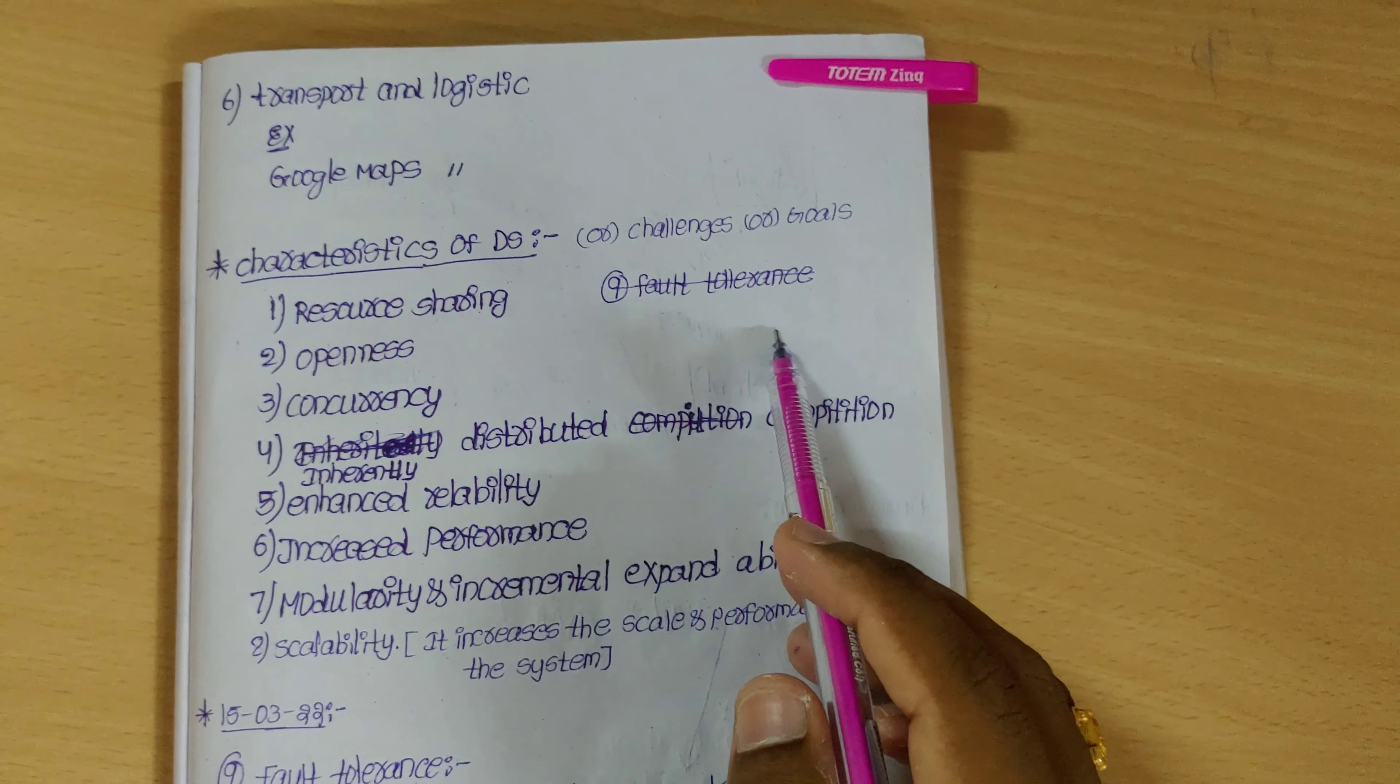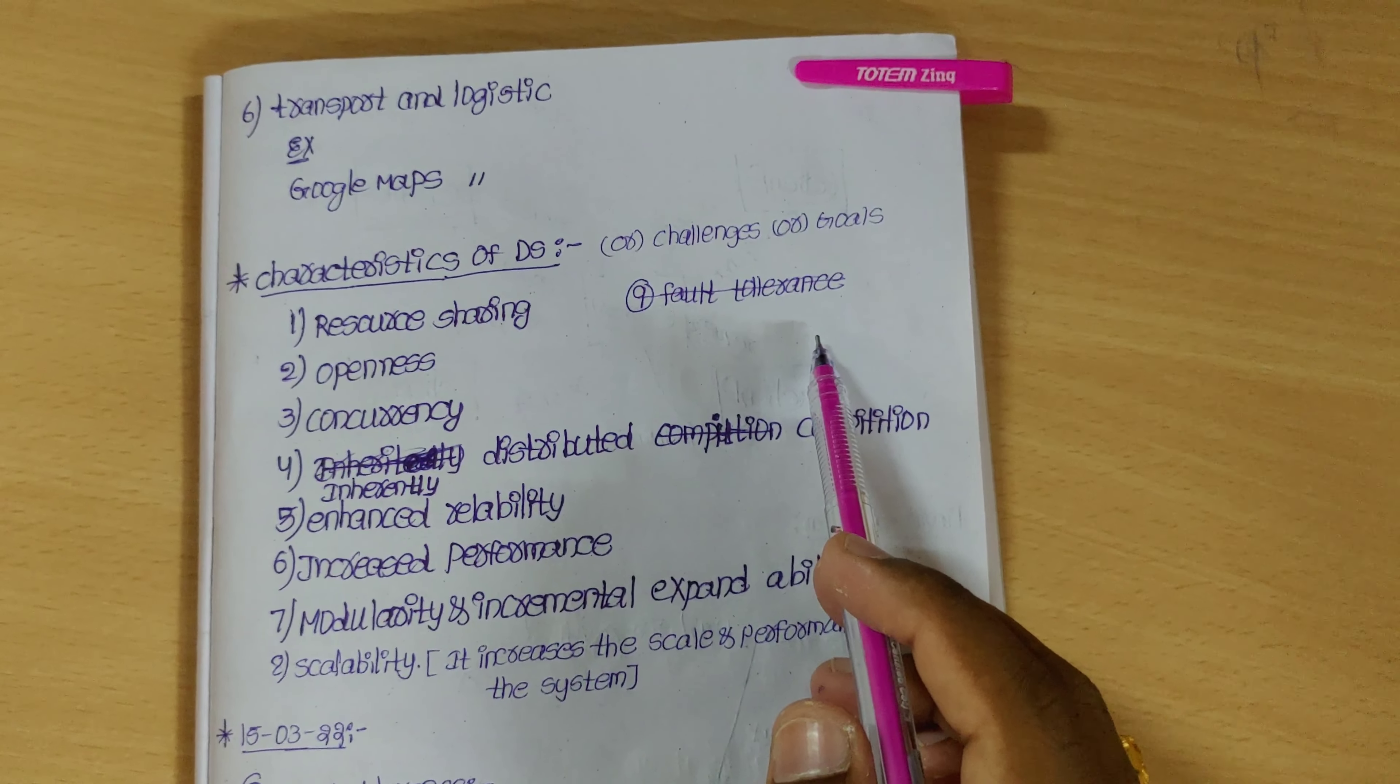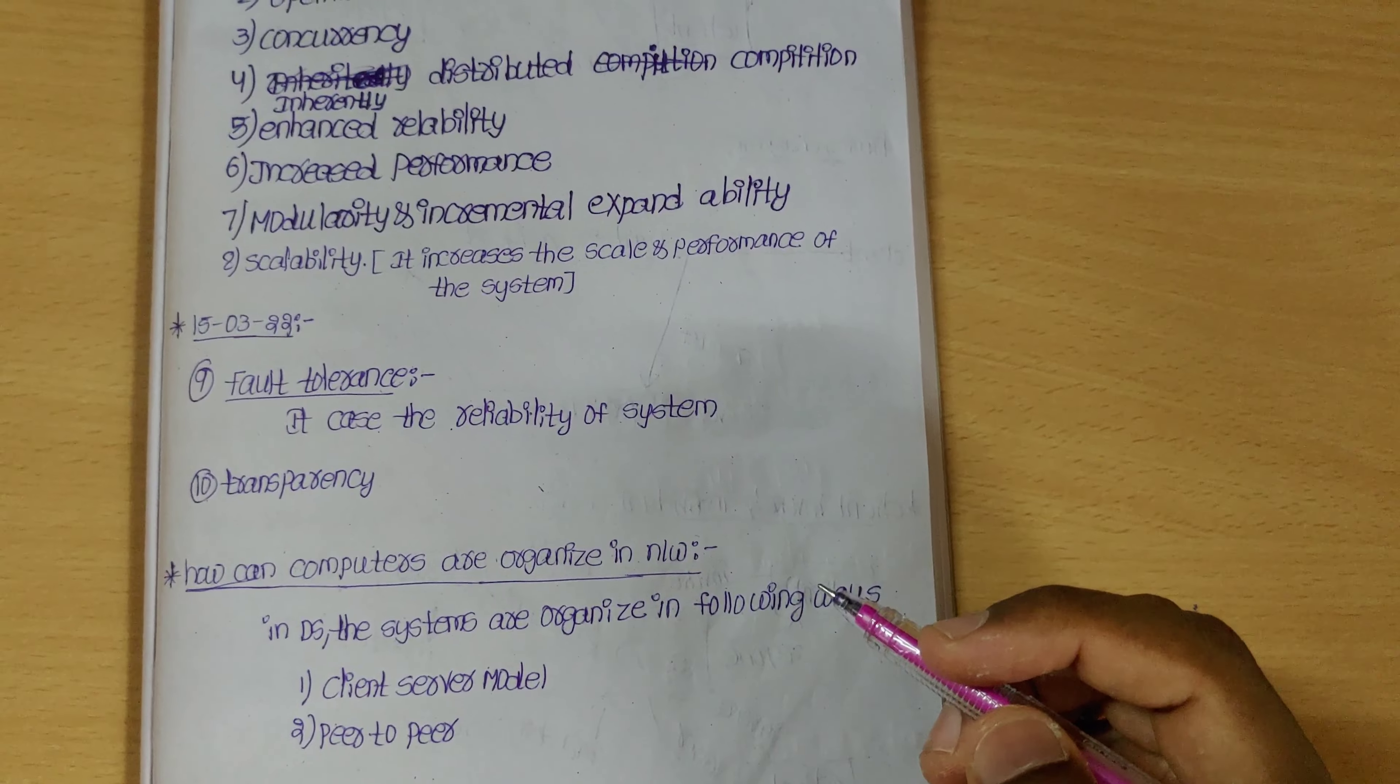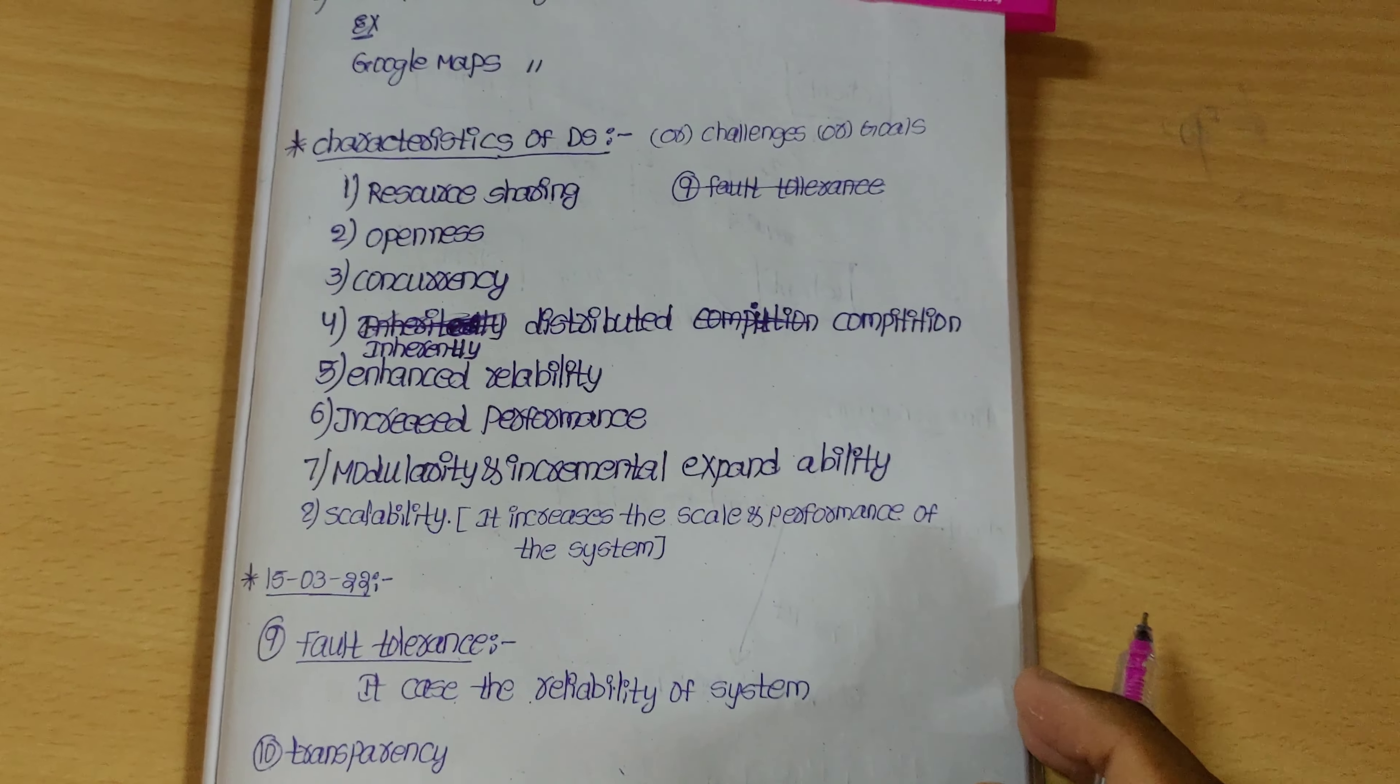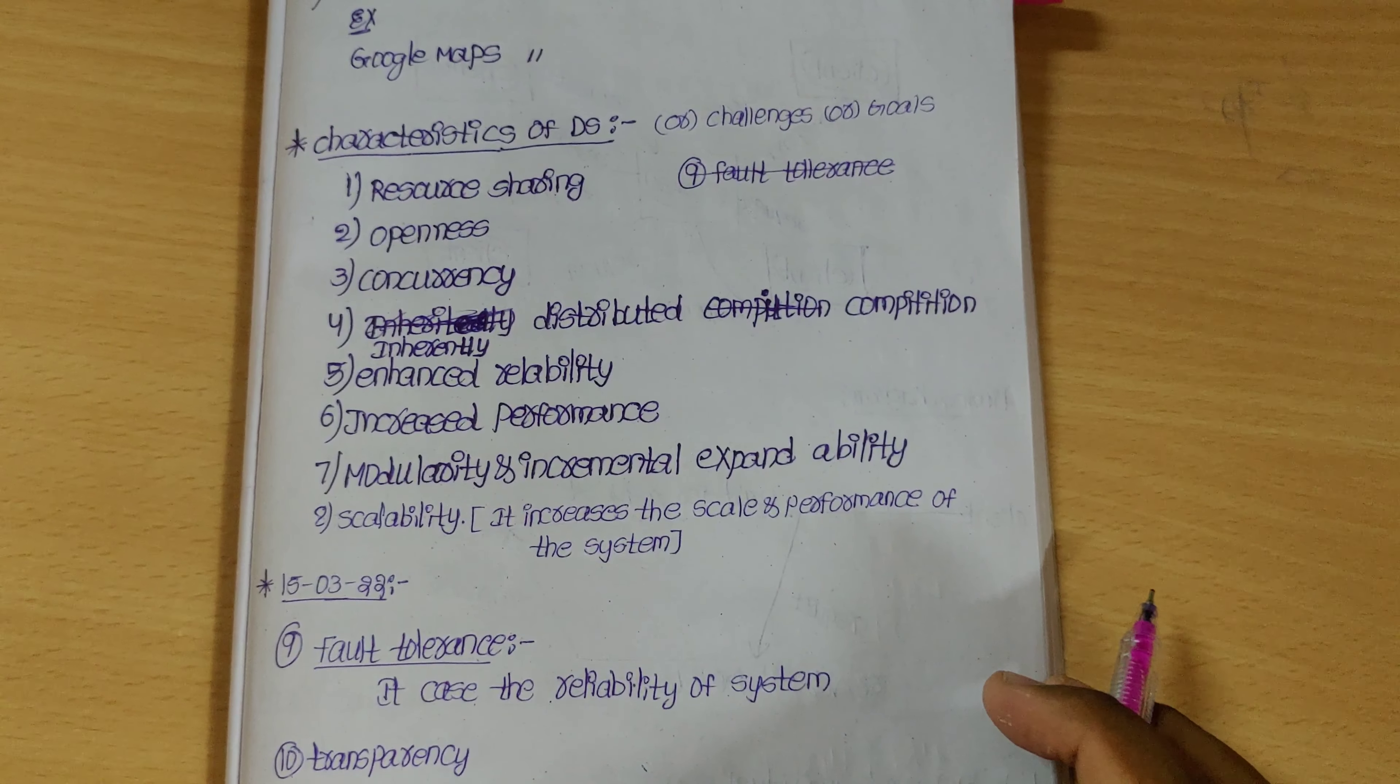The characteristics: First, resource sharing. In a lab with multiple systems, those systems are connected so the ecosystem shares data. Next is openness - our data and system can be accessed by other users, unlike the parallel system. Then there's concurrency - it maintains responsiveness. And distributed computation - it provides equal amount of priority.